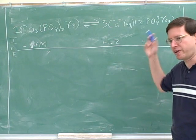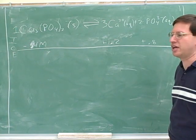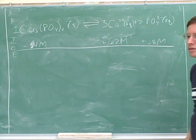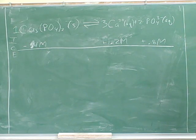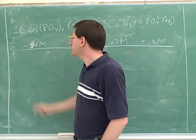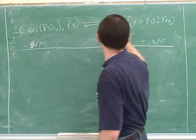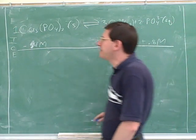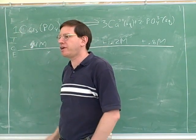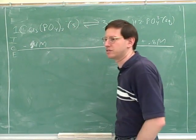That's not just true for solubility — that's true for any ICE table: acids and bases, redox reactions, any type of reaction. If you know one of the changes, you can use the coefficients to find the other changes, but unfortunately most students don't realize that. The coefficients can refer to moles or molarity, but they can't mean grams. So if you're working with grams, you would have to convert to molarity before you could use the ICE table and the coefficients.